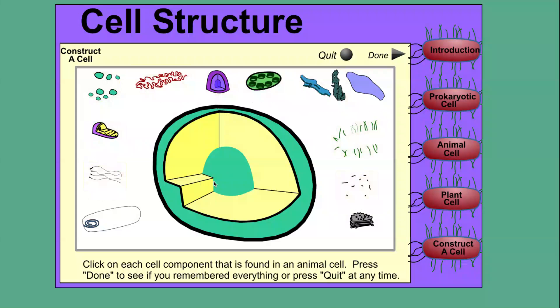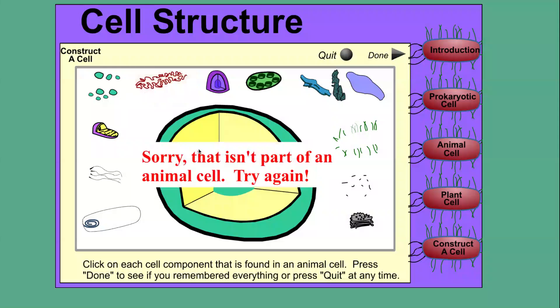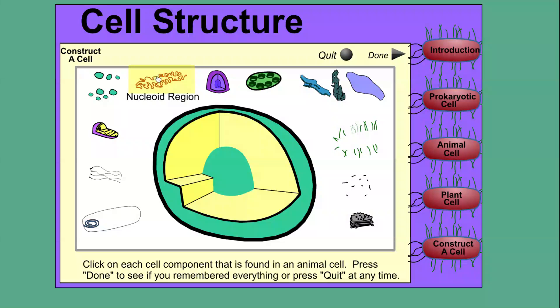You choose which one belongs to this one. For example, for this animal cell, you choose nuclear region. Let's see. And it will say sorry, that's either part of a cell. So try to collect the right organelles and after you finish, you will know your progress.